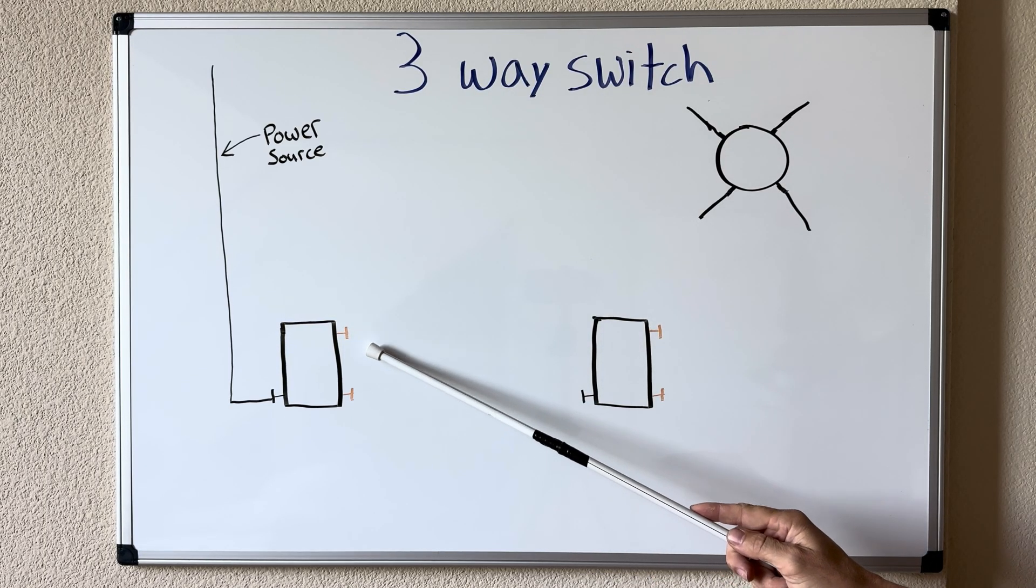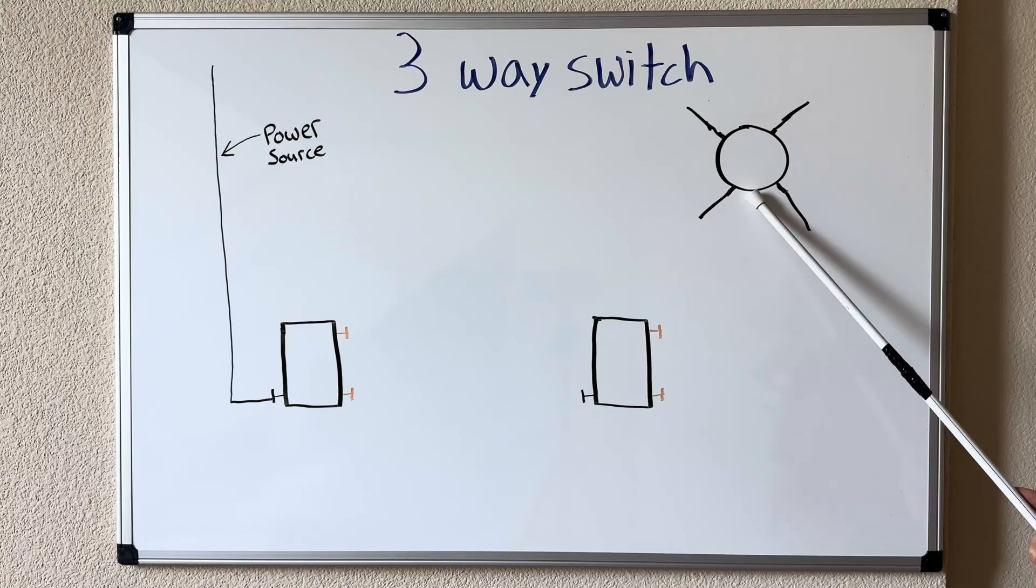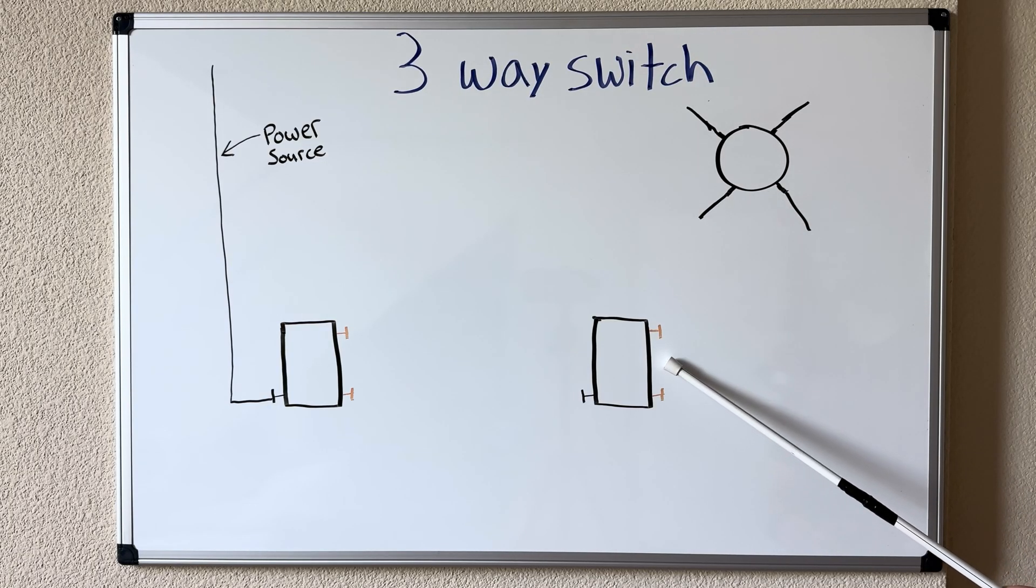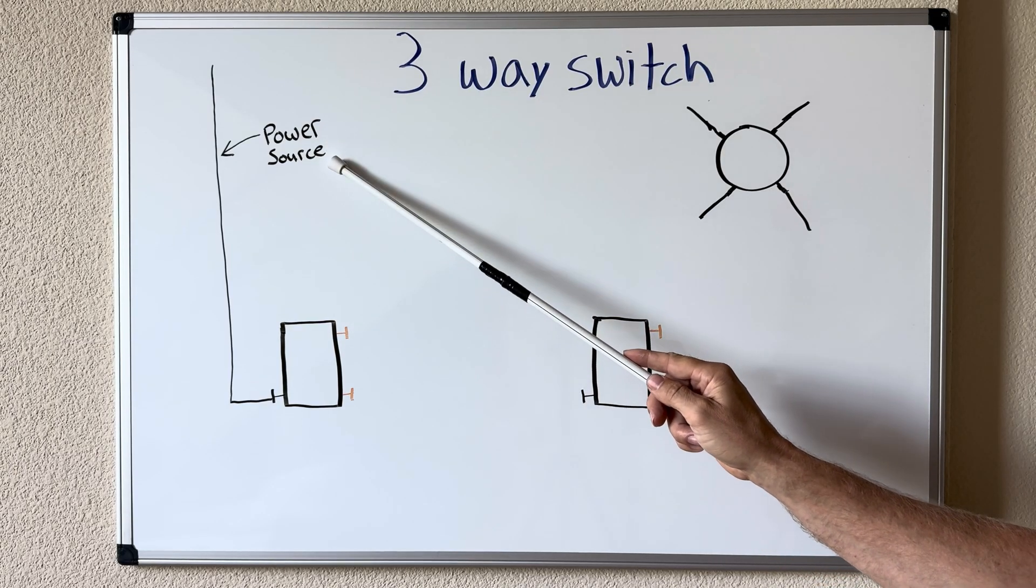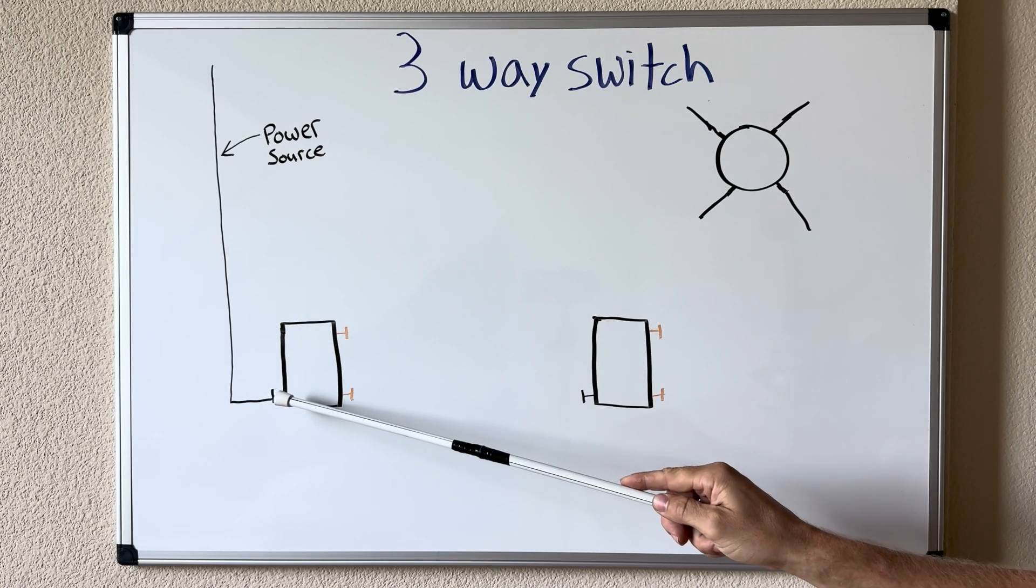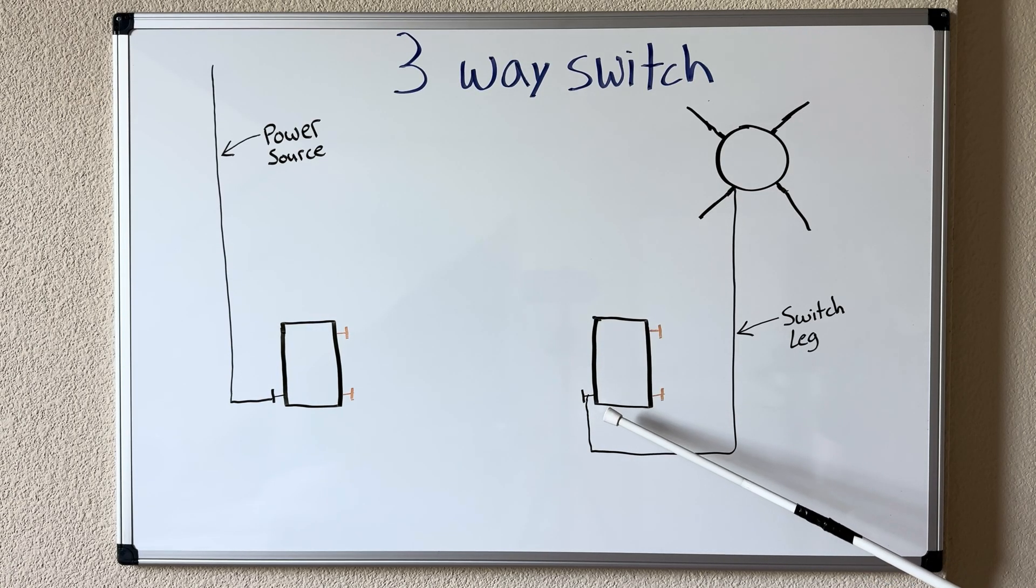Now on one switch you're going to have a power source and on the other you're going to have a switch leg. It doesn't matter which one you choose, obviously this switch is closer to our light so this is going to be our switch leg. And as you can see over here we've made this our constant power or power source indicated right here that ties into the black common screw. And as I said our switch leg will be coming off the black common screw of our other three-way switch that goes directly to our light.